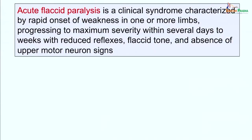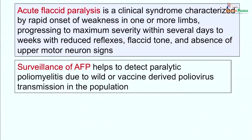Acute flaccid paralysis is a clinical syndrome characterized by rapid onset of weakness in one or more limbs, progressing to maximum severity within several days to weeks, with reduced reflexes, flaccid tone, and absence of upper motor neuron signs. Surveillance of acute flaccid paralysis helps to detect paralytic poliomyelitis due to wild as well as vaccine-derived poliomyelitis transmission in the population.